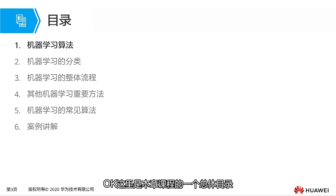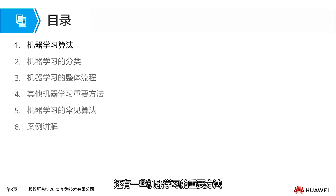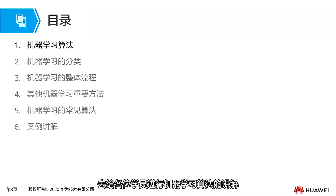This is the general outline of this chapter's course, which includes machine learning algorithms and classifications of machine learning, the overall process of machine learning, some important methods of machine learning, common algorithms, and finally, we will use a case to explain a machine learning algorithm to all students.